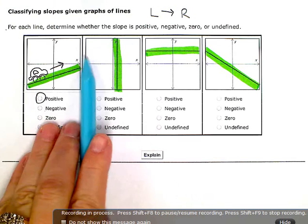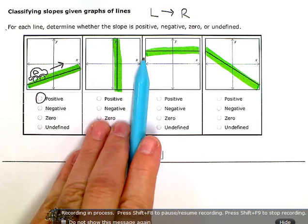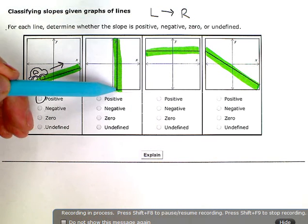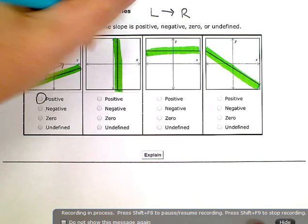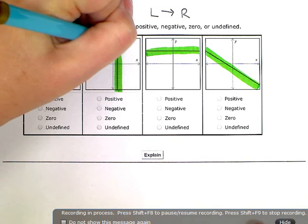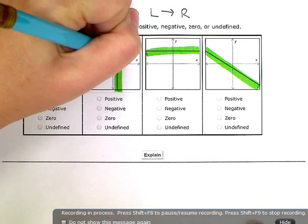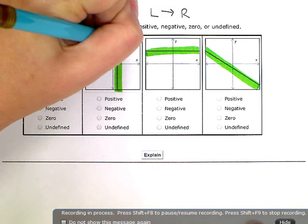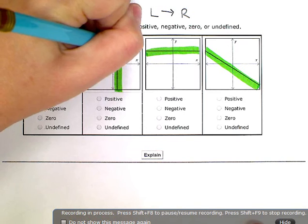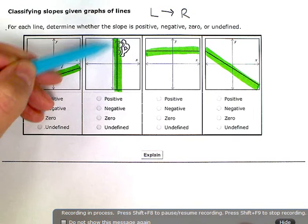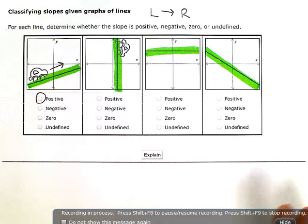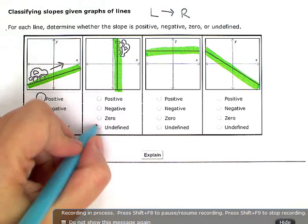Now this one, left to right, this one just goes straight up and down. So if you think of the car again, this would be a disaster if you were driving either up or down this line. So this one is undefined.